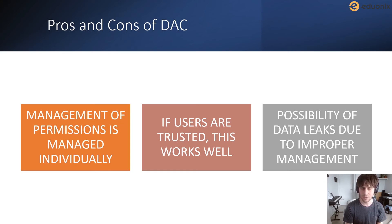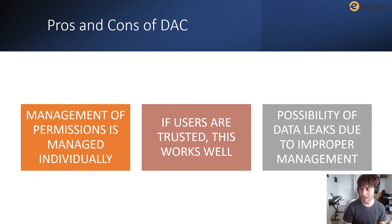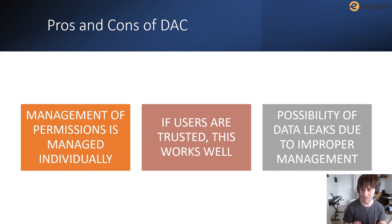Generally, discretionary access control can work well in systems where people are aware of what access control is targeted to do. A lot of the people who are more technically inclined could use this sort of system very well, while people who aren't as technically inclined might have more trouble with it. This works great for situations where the data is not considered to be all that privileged. If somebody writes up a document and just wants to give out permissions to certain people, that works very well. But if the data is something very sensitive, maybe we should let someone with a better understanding manage the permissions.